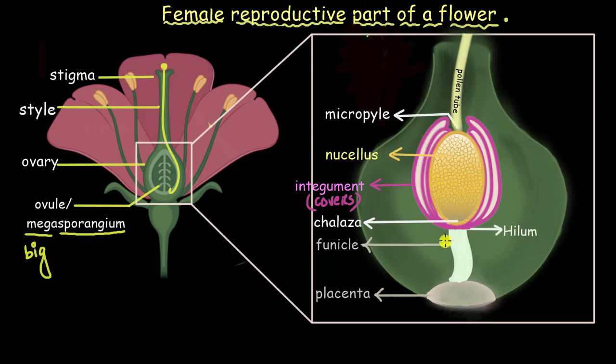If you are wondering, oh my god, there are so many new terms to remember, then let me tell you that these are all words from the Greek and Latin origin, and that's why we find it very difficult. So should we remember these names? Well, just for the sake of exams we should, but otherwise it is okay if we don't remember all these terms. All right, so this is all about the structure of the ovule.